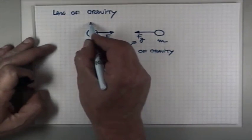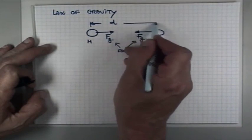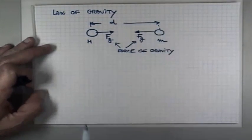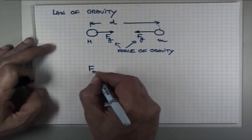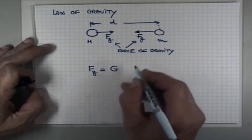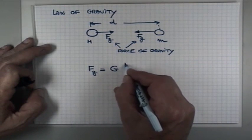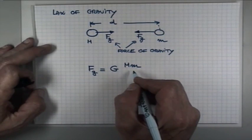And if the distance between the objects or their centers is d, then the law of gravity says that the size of this gravitational force is proportional to the masses of the two bodies interacting with each other.